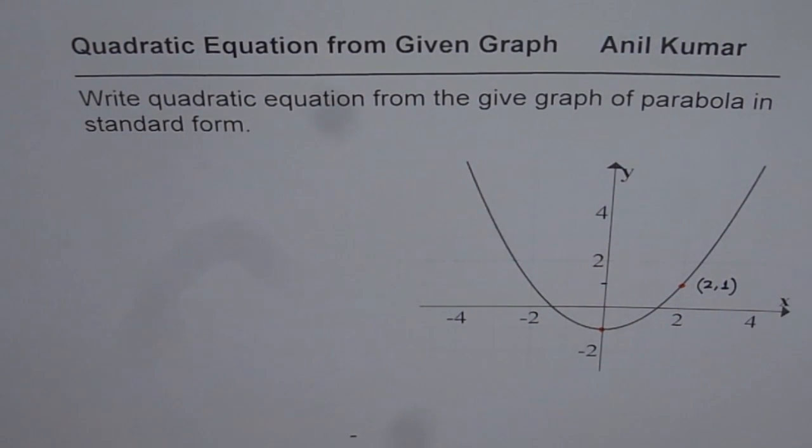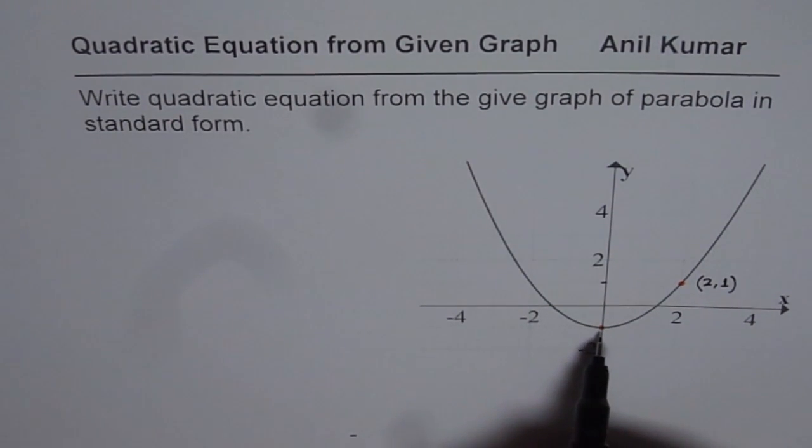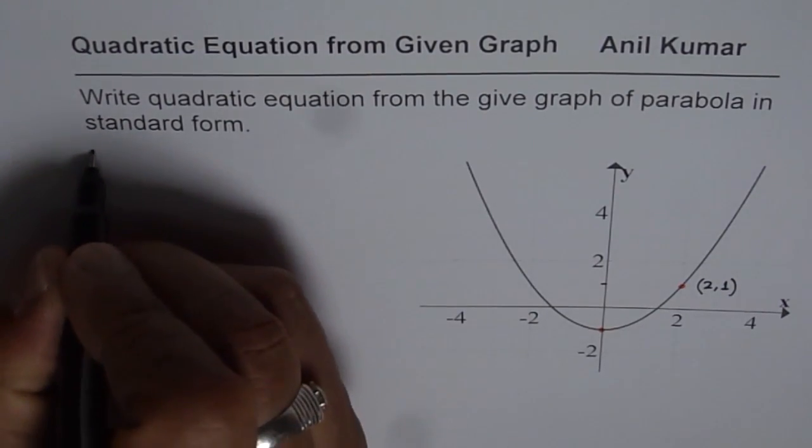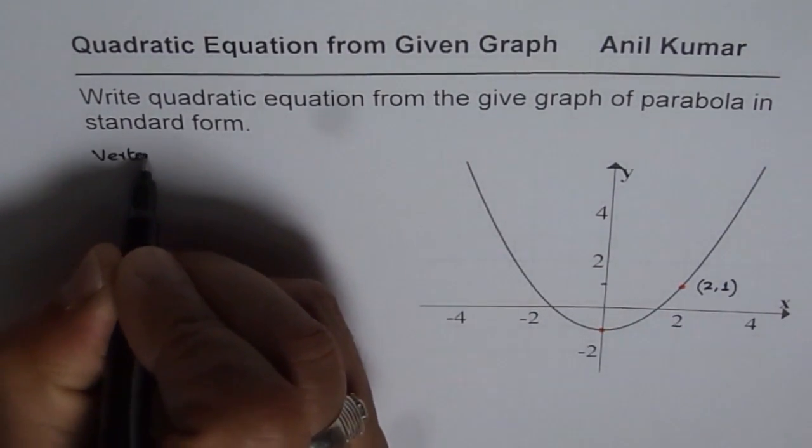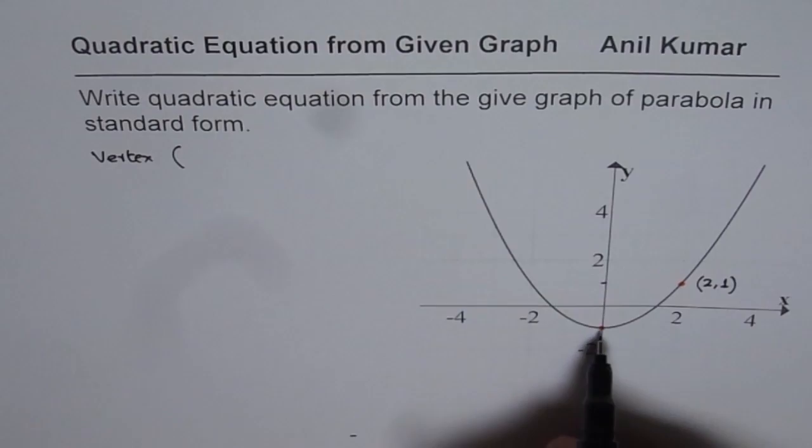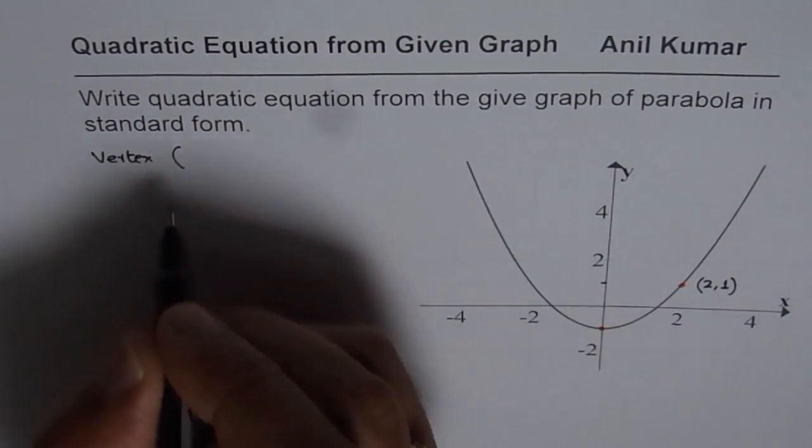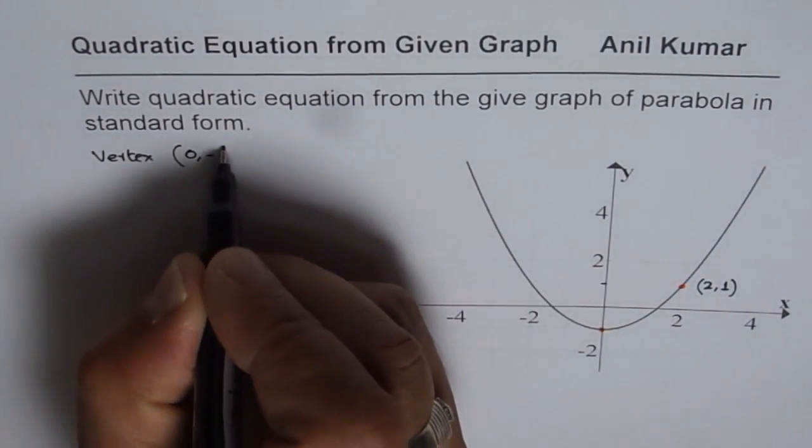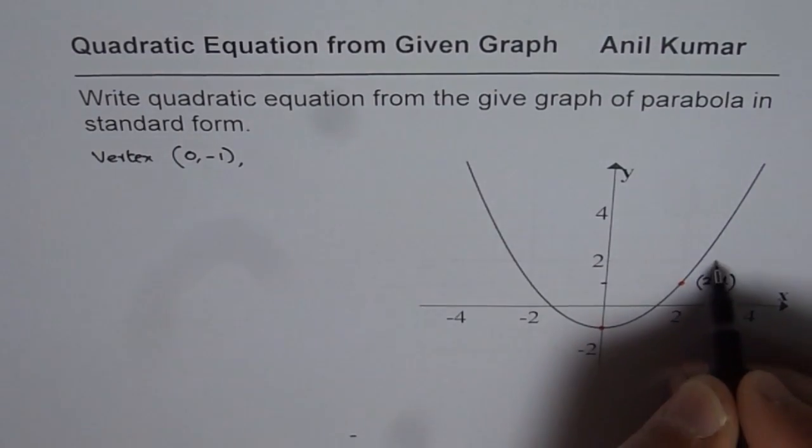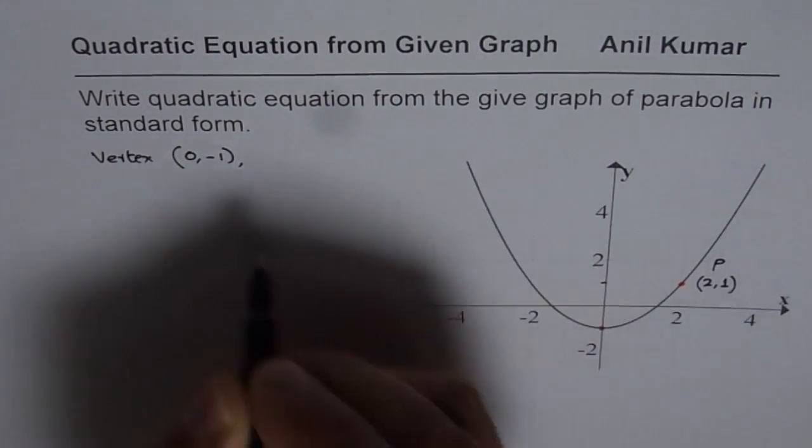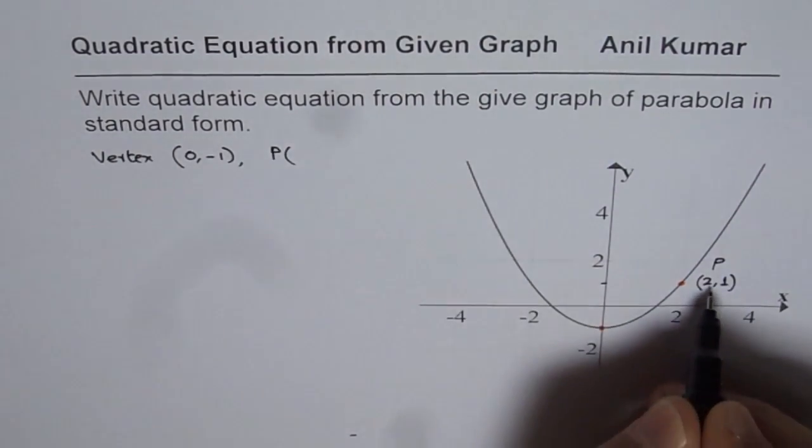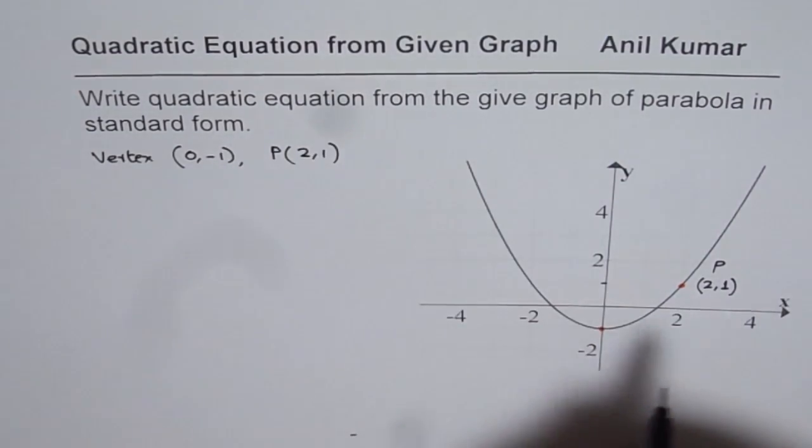You can pause the video, try it out, and then check with my solution. Now let's see what the vertex is. The vertex here is given as x value 0, y value minus 1, so (0, -1). We are also given point P which is (2, 1).